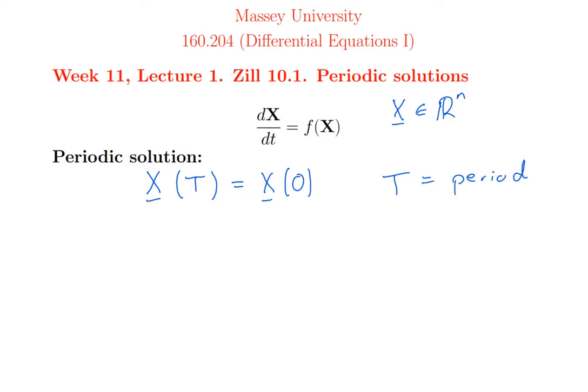And the number T is going to be called the period. So that means every component of the solution, x1, x2, x3, x4, x5 and so on, they all have to be periodic functions all with the same period.